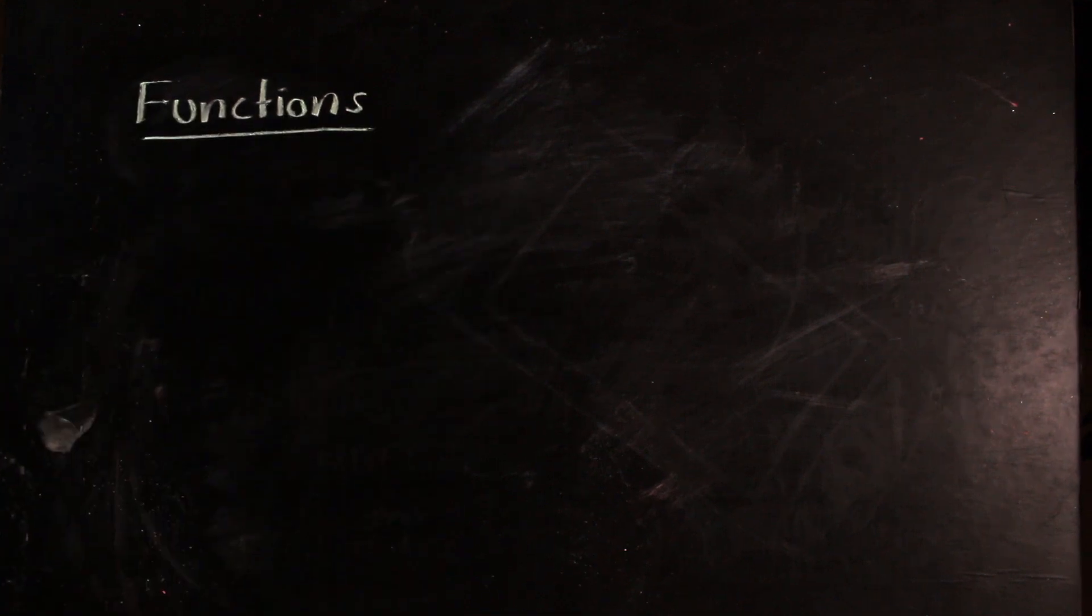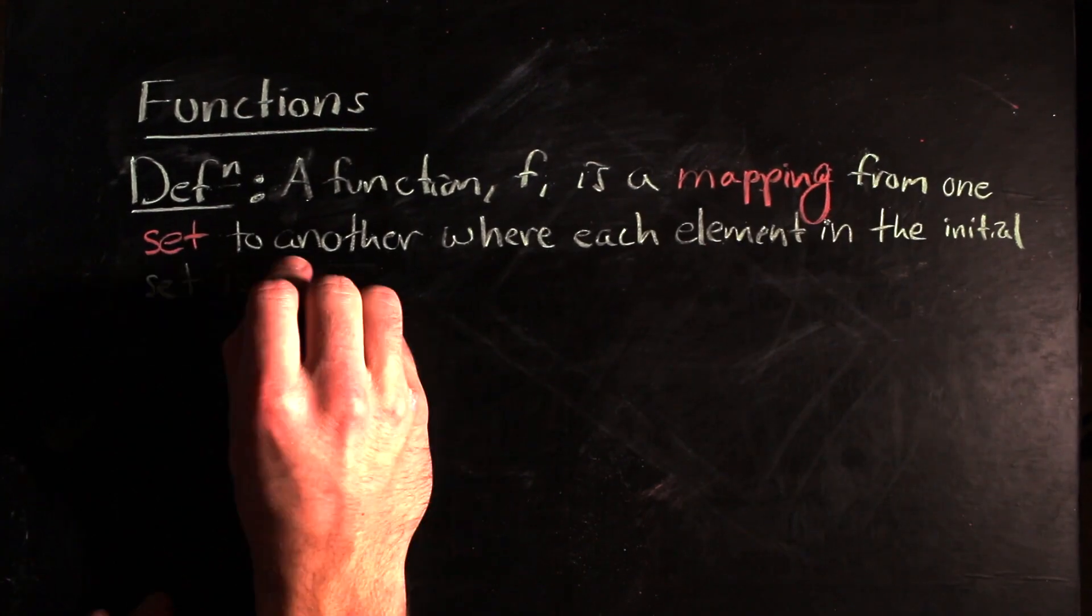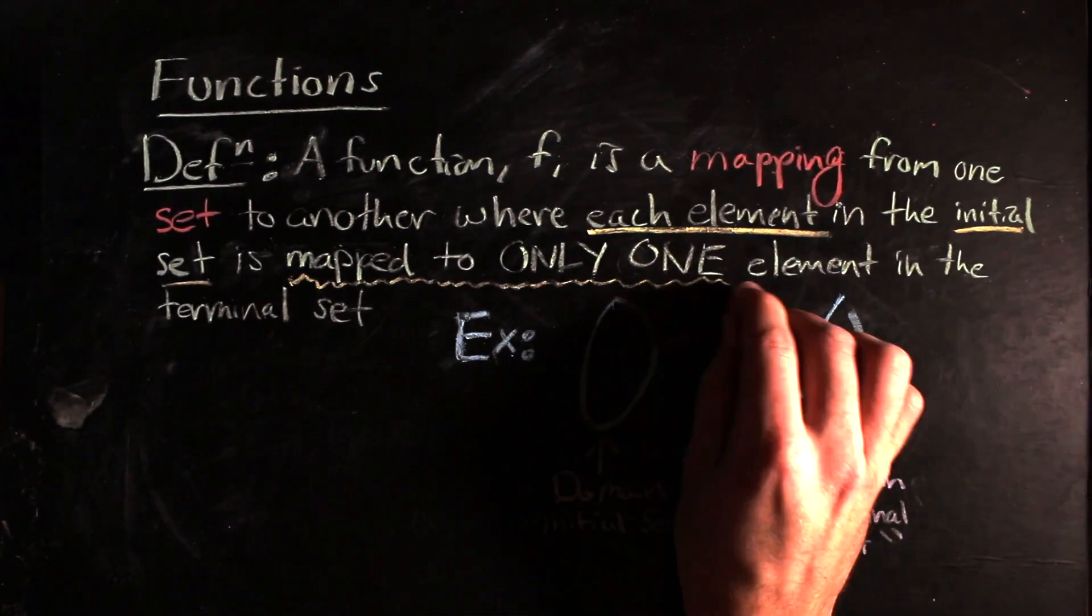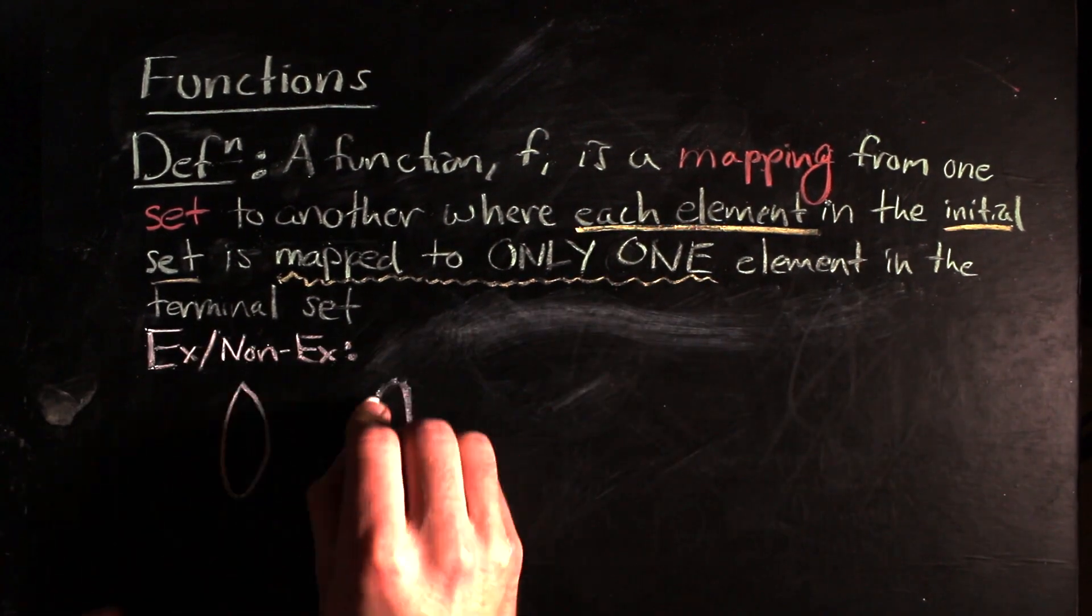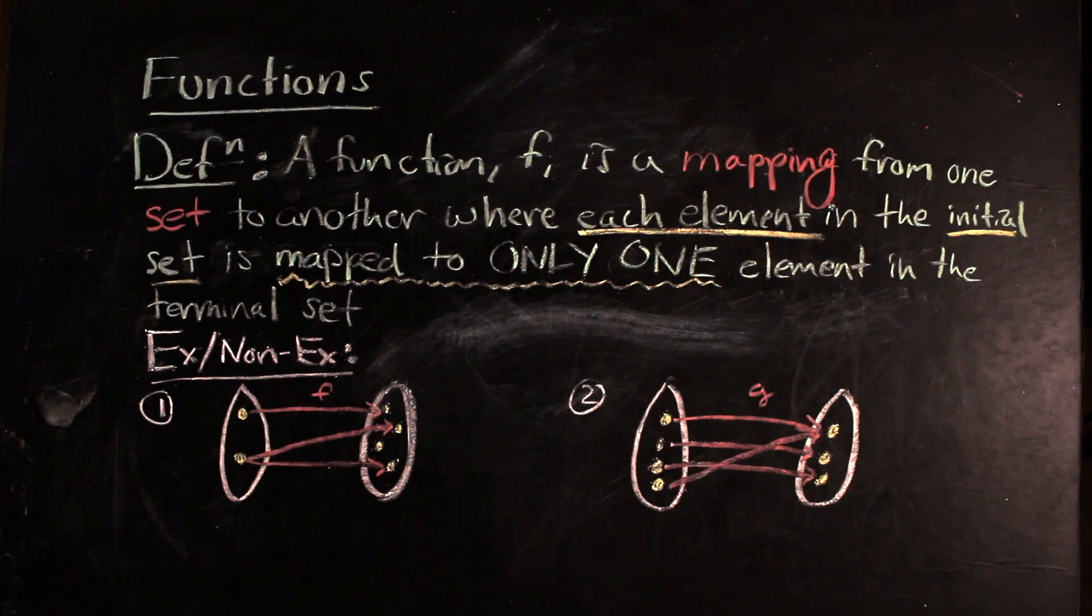In order to get at this idea of choice, we should talk about functions and then the idea of a choice function. For the purposes of this video, we'll be sticking to the naive notion of a set. First, a function is a mapping from one set to another, where each element in the initial set or the domain is mapped to only one element in the terminal set or the co-domain. Here are some examples and non-examples. If you're unsure of which is which, now would be a good time to stop and think about it before we move on.